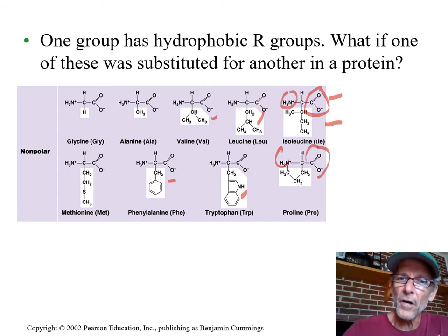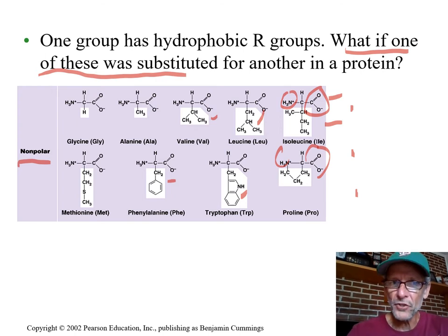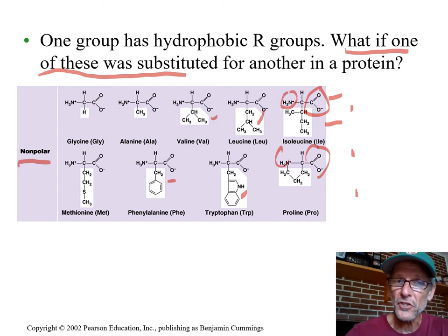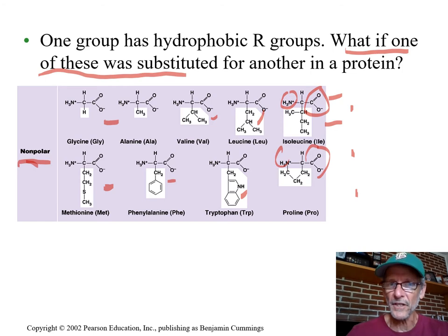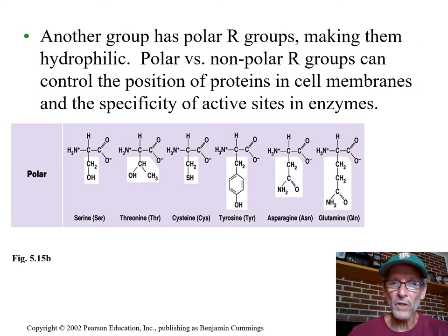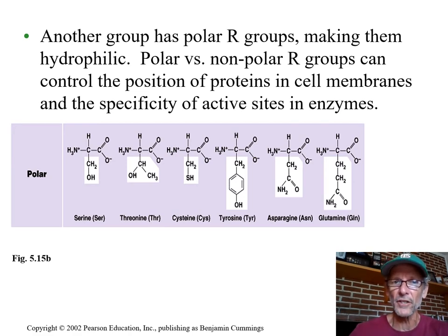Here is a very typical kind of question: what if one of these — meaning these with the same basic nonpolar property — was substituted because of a mutation for another in a polypeptide chain? There might not be much difference in the shape of that protein, since their R groups have the same nonpolar kind of characteristic. Here we have some polar ones. What if one of these, by mutation, was substituted for one of the nonpolar ones? Your prediction would be that this would more likely cause a change in the shape and therefore the function of that protein.